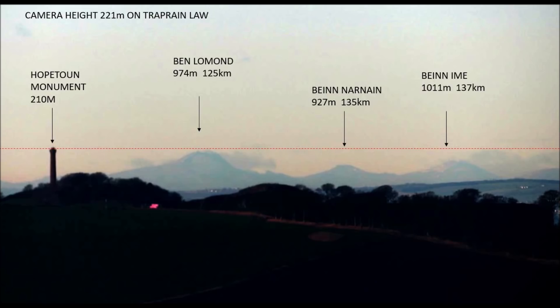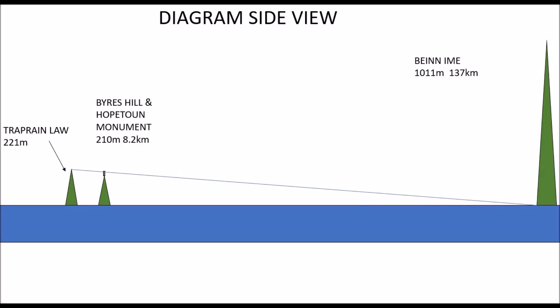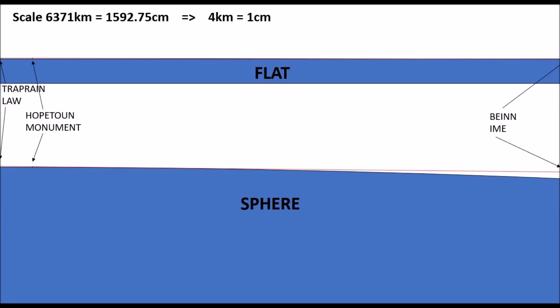Let's look at this in some scale diagrams. This diagram is not perfectly to scale and I drew it to try to illustrate the point. If we are looking from Treprain Law past the Hopeton monument on Byers Hill, we should be looking towards the base of Ben Im, when in fact our line of sight goes above the top of Ben Im. People complain that the vertical and horizontal scales are so different that it doesn't match reality. So let's look at it in a proper scale diagram. Here I've used a scale where the radius of the Earth is reduced to 1,592.75 centimetres, meaning 4 kilometres on the real Earth equals 1 centimetre on our diagram.